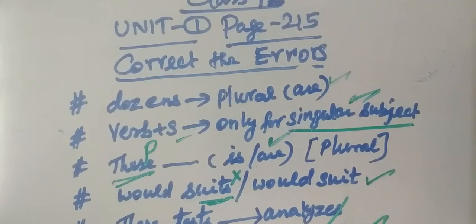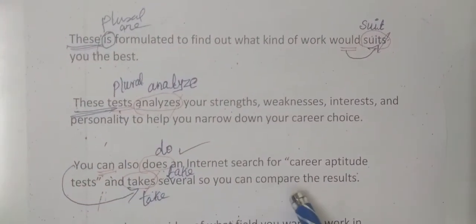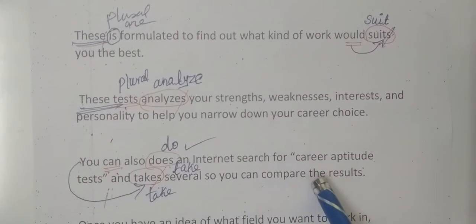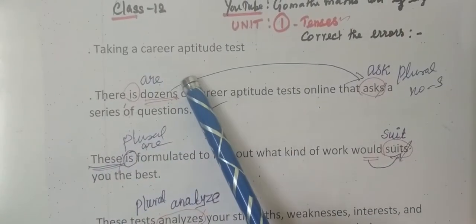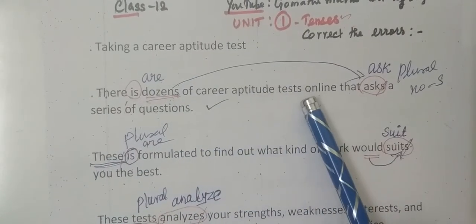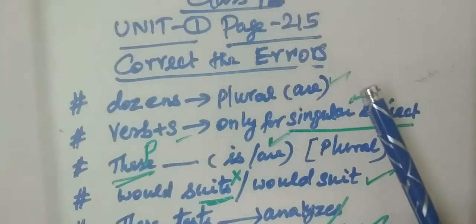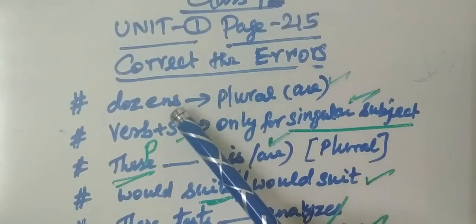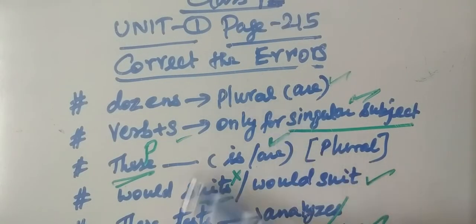Hello students, this is for Class 12, Unit 1, page 125 — correct the errors, book back exercise. Before seeing the topic, this is the paragraph. We will correct the tense. We will have a little clue. This is the exercise.